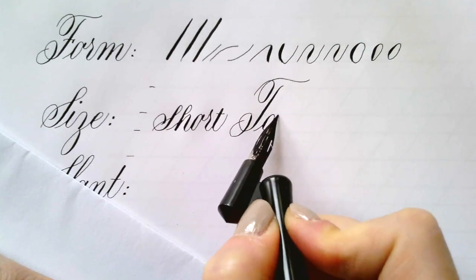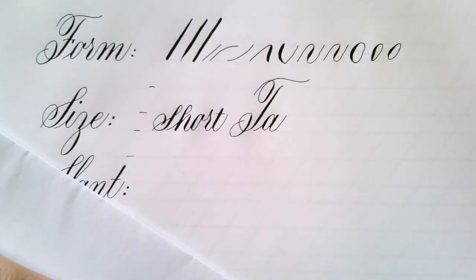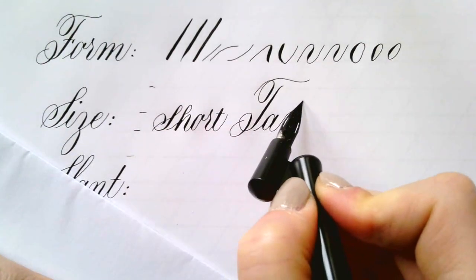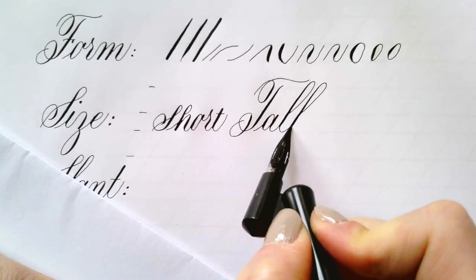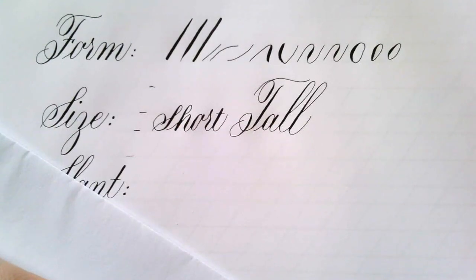And if you're writing them taller, remember that the grace and flow of copperplate contrast, thicks and thins, is limited by the flexibility of your nib. If you write too tall, the lines may look too thin in comparison.